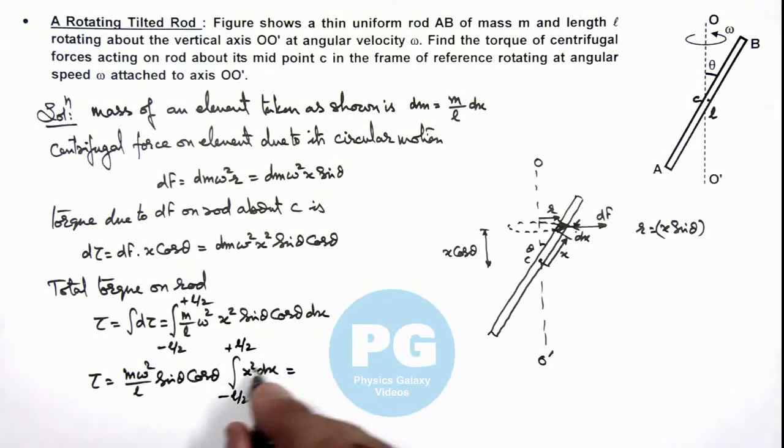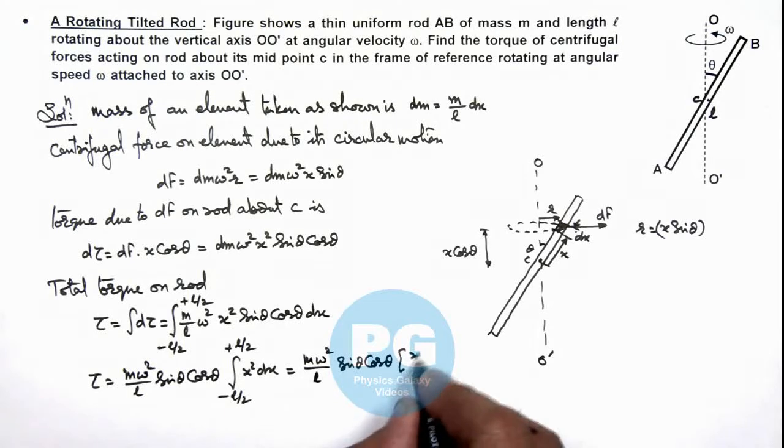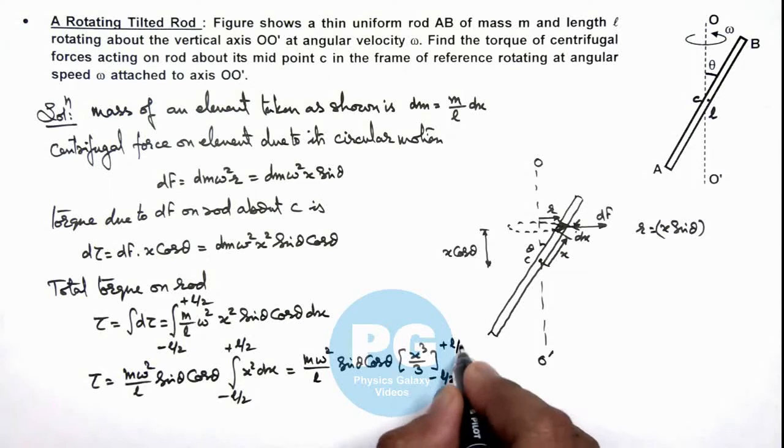Which gives on integrating, this becomes x cube by 3, and this will give us m omega square by l sine theta cos theta multiplied by x cube by 3, and we substitute limits from minus l by 2 to plus l by 2.